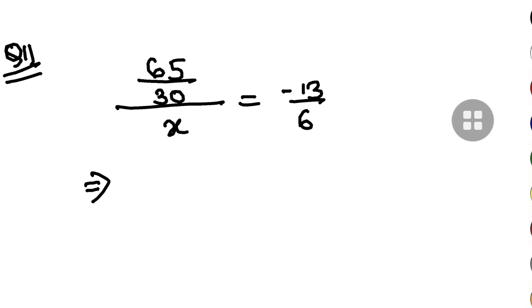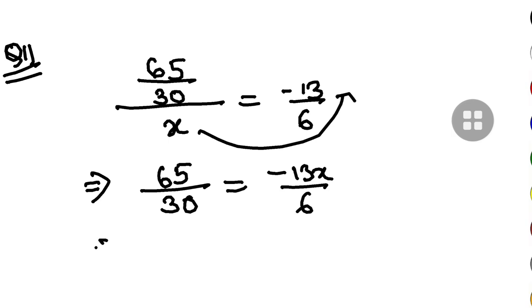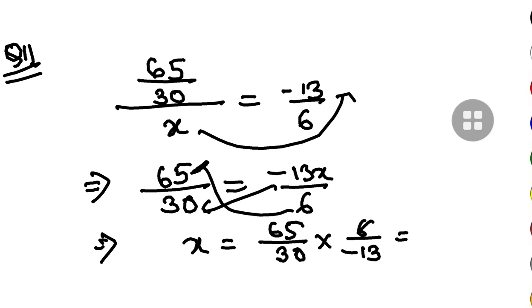So this is basically, if I do cross multiplication, 65 by 30, this x will go here. So minus 13x by 6. So now from here I will find the value of x. So x will be 65 by 30 into, this 6 will go up and this minus 13 will come down, minus 13 like this.